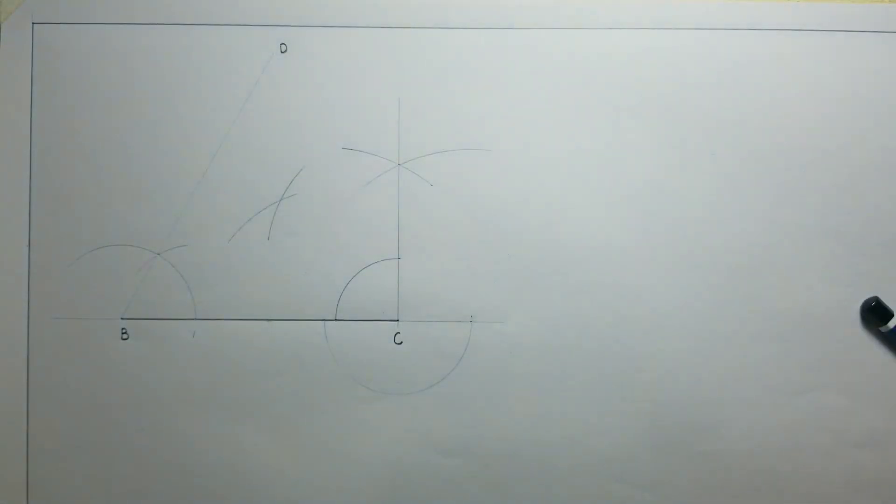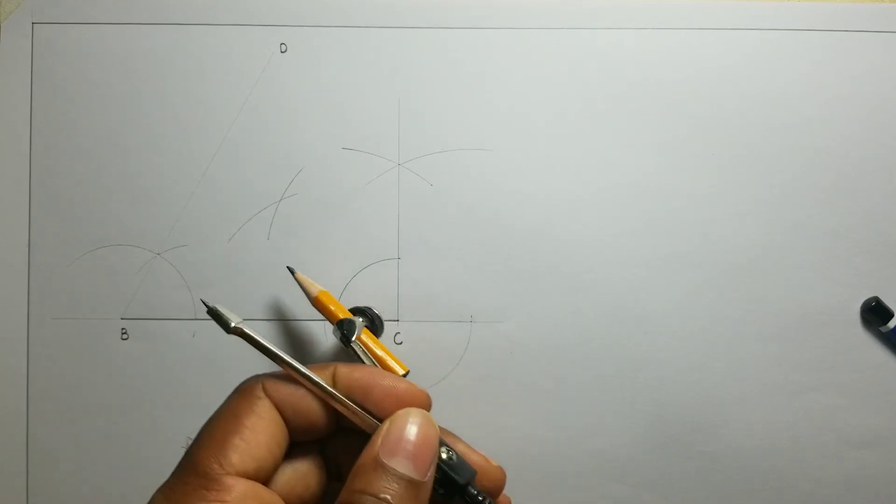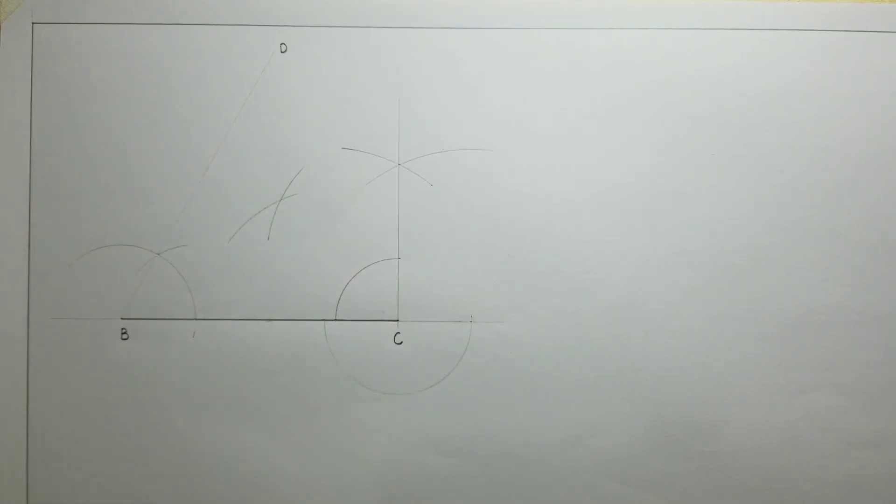Now we will draw a line from C through the intersection of the arcs.